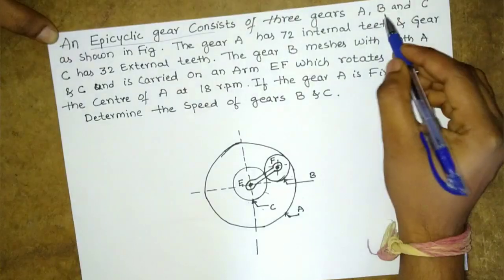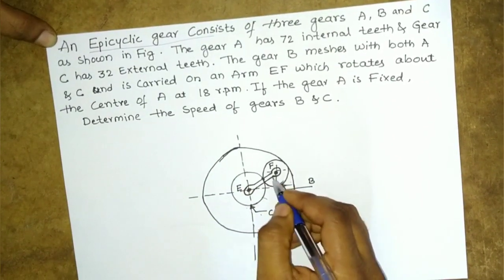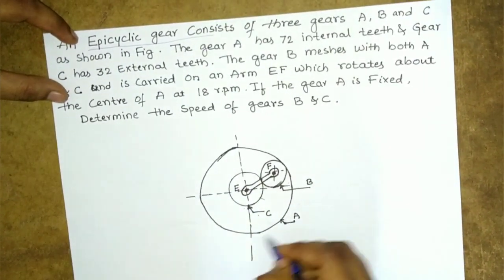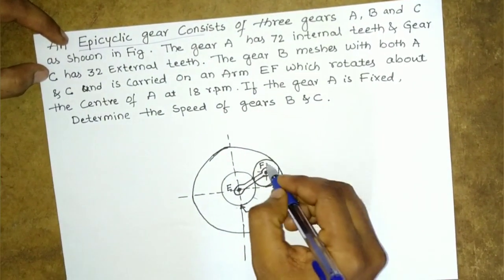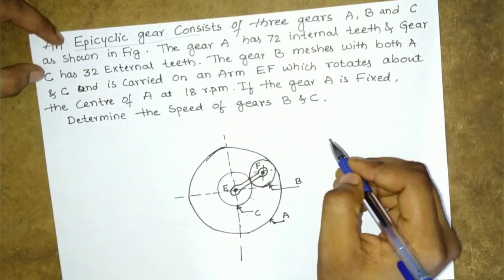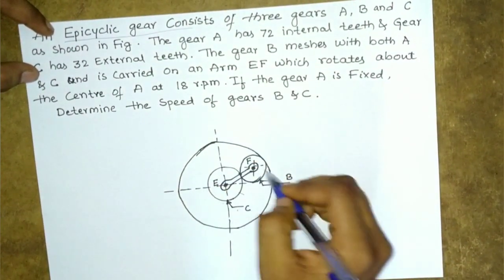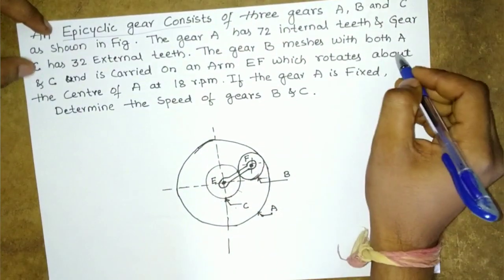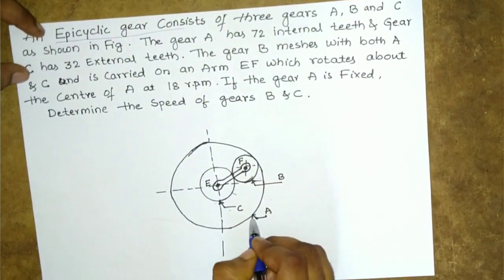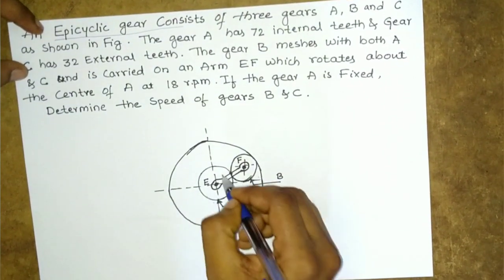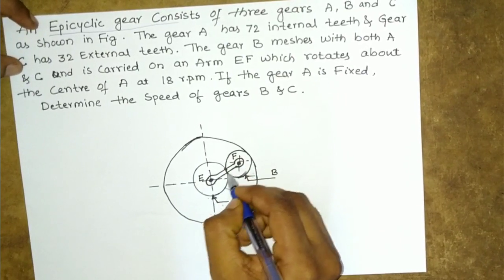The arm and gears are labeled A, B, and C as shown in the figure. Gear A has 72 internal teeth and gear C has 32 external teeth. Gear B meshes with both gear A and gear C.